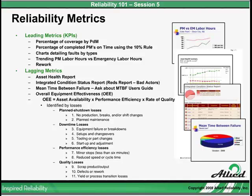What I have listed are not encompassing all the reliability metrics you may need — these are just some examples. On leading metrics or KPIs: the percentage of coverage by predictive maintenance — what percentage of your assets are covered by predictive maintenance. And the percentage of completed PMs on time using the 10% rule. The 10% rule is simple: the PM must be done within 10% of the time frequency or it's out of compliance.